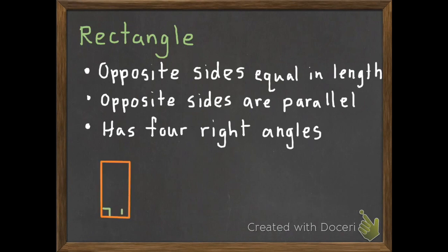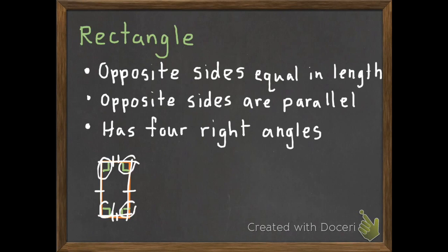Here's an example of a rectangle. The opposite sides are equal in length. The opposite sides are parallel — so these sides are parallel, those sides are parallel. And it has four right angles.